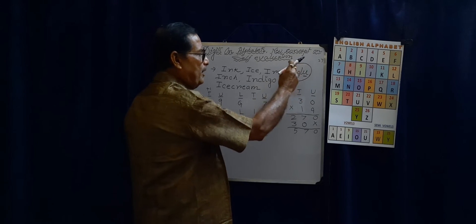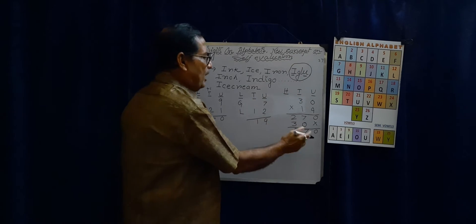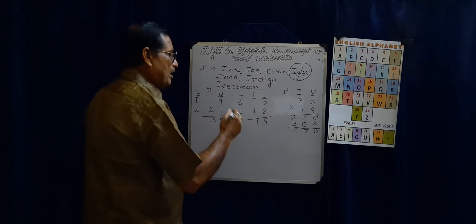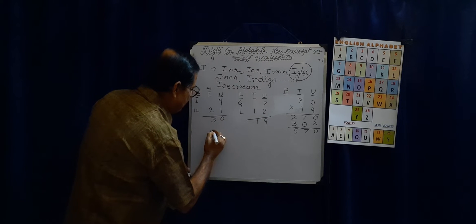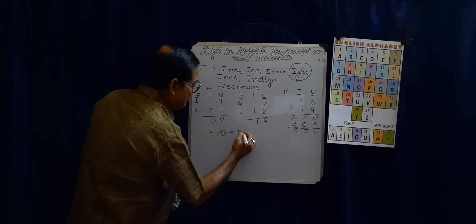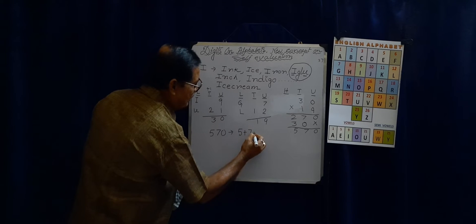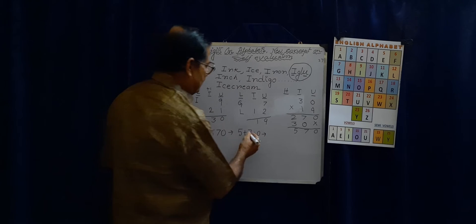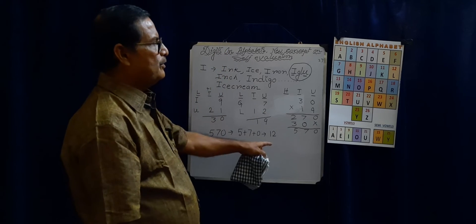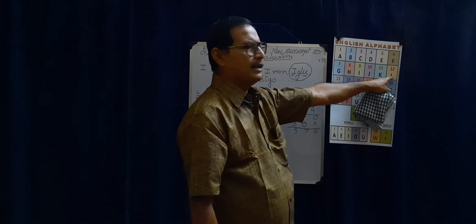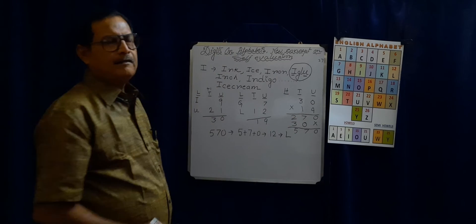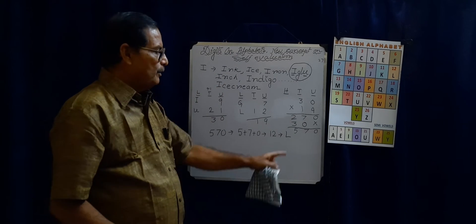This is not the end of it. Now let us see what more we can do. It is 570. If we add the digits: 5 plus 7 plus 0 equals 12. Now, digit 12 represents which letter? It is L. So now we shall write a number of words beginning with L.